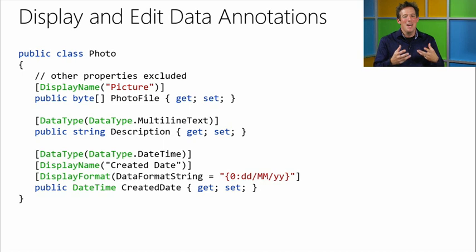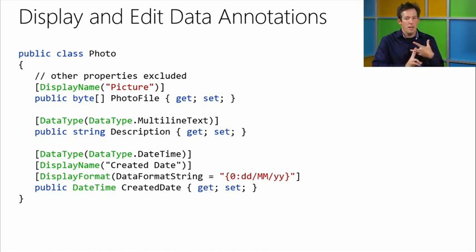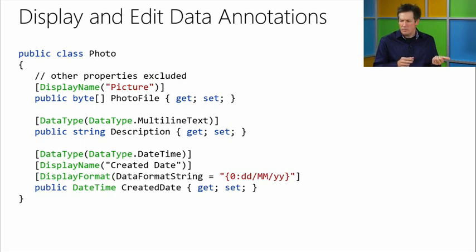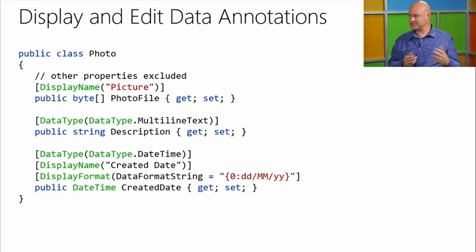On our photo class, we've got a display name of 'Picture' that will be used when set up in a view. We're identifying the description as multi-line text. For the created date, we're not only telling it it's a DateTime and giving it a label of 'Created Date,' but we also have a display format so every time it displays, it's day-month-year with a two-digit year at the end. This is great because it lets you say things about how that class works without writing a bunch of code.